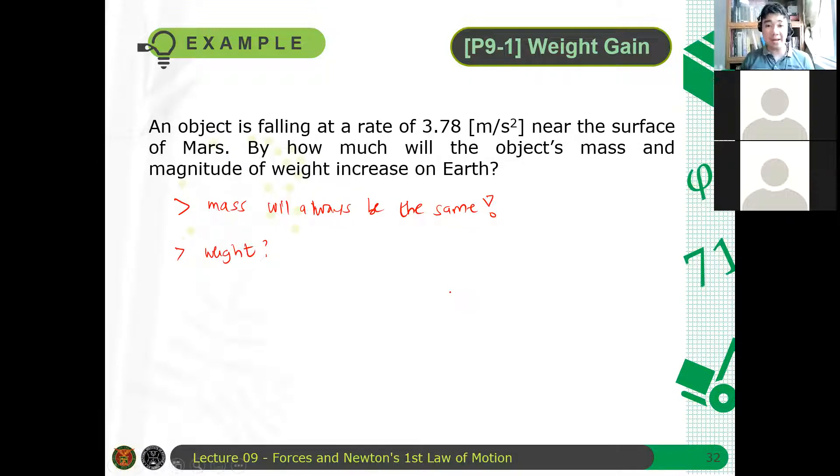So, ang pinakamadaling gawin dito is to take the ratio weight of the moon, sorry, weight of the Earth over weight ni moon. Which is equal to mass of the Earth times acceleration due to gravity of the Earth. Magnitude lang naman. Okay, so we don't care about the directions.